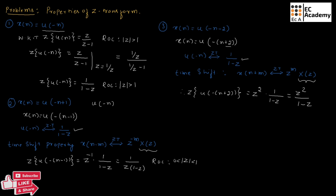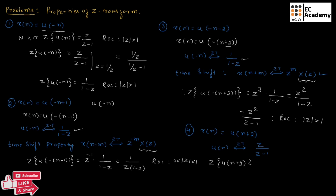From this equation, taking minus as common, we can write Z squared divided by Z minus 1, so the ROC will be magnitude of Z greater than 1. Now let us take X of n equal to U of n plus 2. Again, using the Z-transform of U of n which gives Z divided by Z minus 1, and applying the time shift property, the Z-transform of U of n plus 2 equals Z to the power of 2 into Z divided by Z minus 1. This simplifies to Z cubed divided by Z minus 1, with ROC magnitude of Z greater than 1.